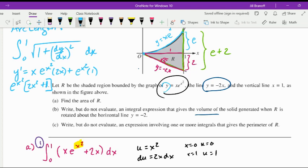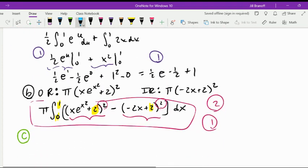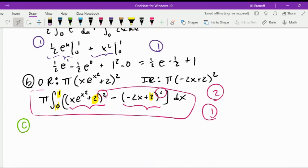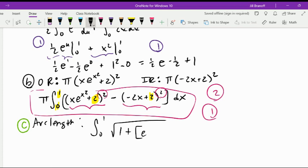I'm going to scroll down so that I have a little space to write this actual answer. So for part C, for this arc length part, we're going to have an integral from 0 to 1, square root of 1 plus that derivative expression I had written above, e to the x squared times 2x squared plus 1 quantity squared dx.